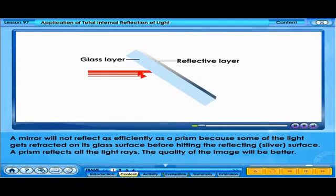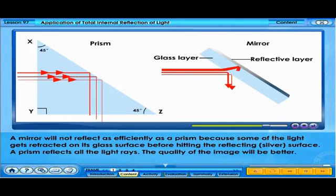A mirror will not reflect as efficiently as a prism because some of the light gets refracted on its glass surface before hitting the reflecting silver surface. A prism reflects all the light rays. The quality of the image will be better.